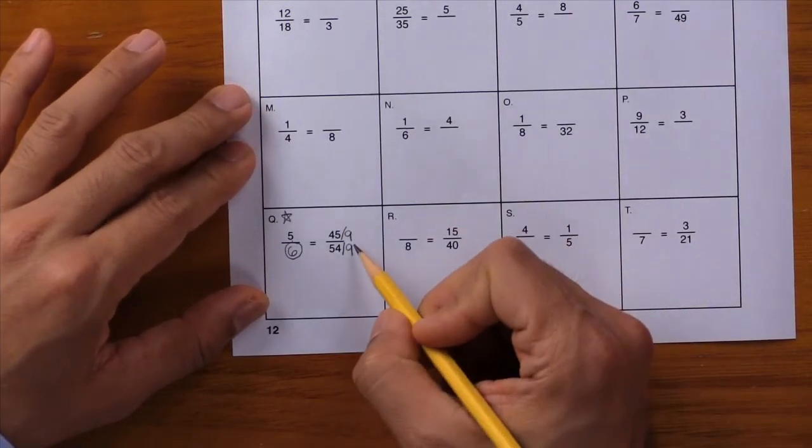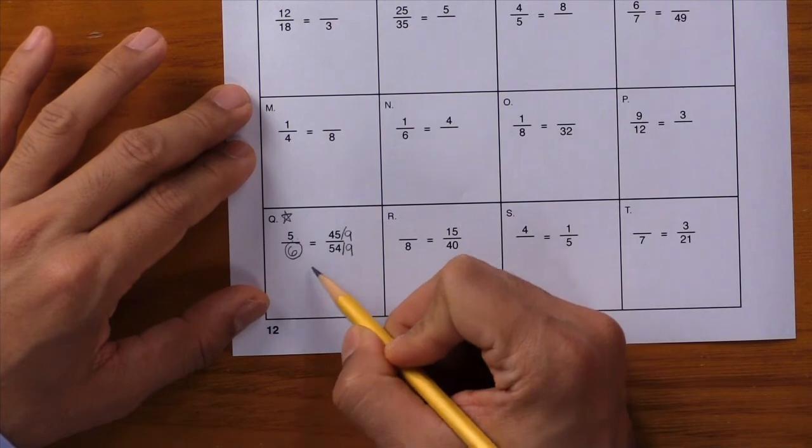Again, remember to go from the full side to the empty side to make things easier. If you need to, you can go from the empty side to the full side, but some students might find that a little more difficult. Let's go back to box Q to see how that looks. Here we went from the full side to the empty side.